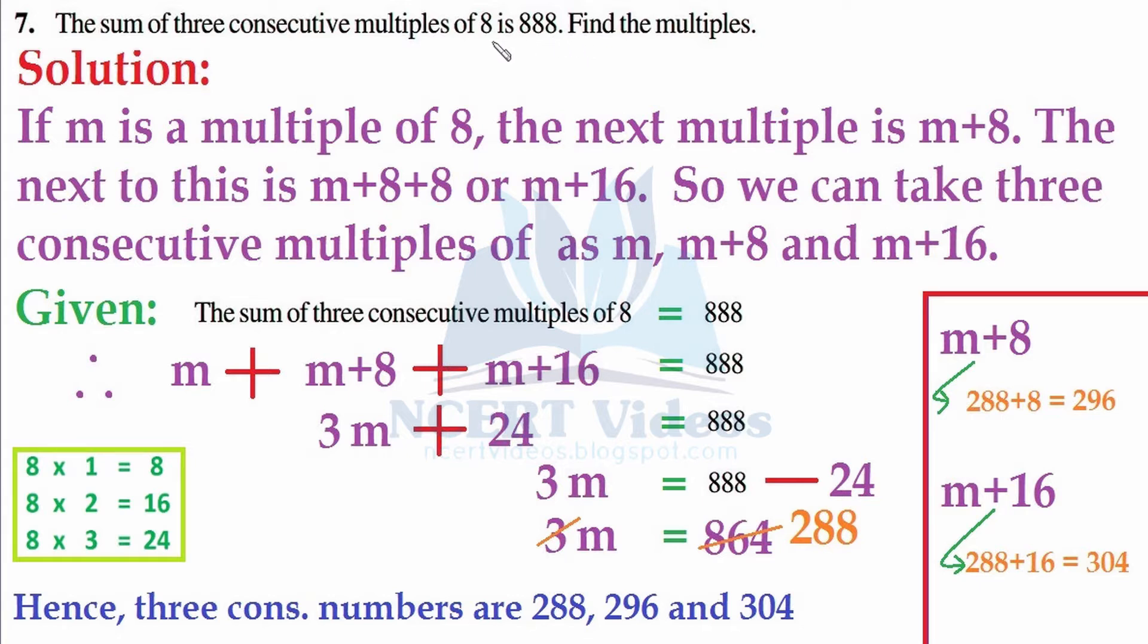If you observe the table of 8 which we have shown you right here: 8 ones are 8, 8 twos are 16, 8 threes are 24. What is happening? Initially we have 8, and when we add 8 to it we get 16. When we add 16 to 8 we get 24, that is double of this 8. So with this idea, with the increment of 8 each time, we have to solve this question.